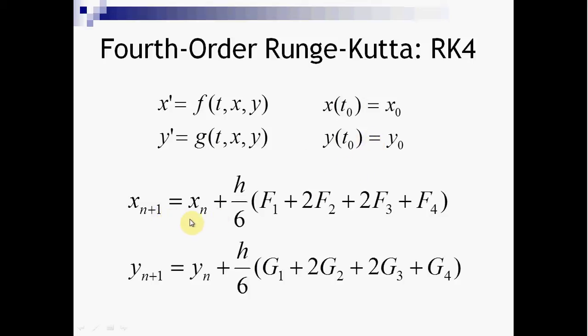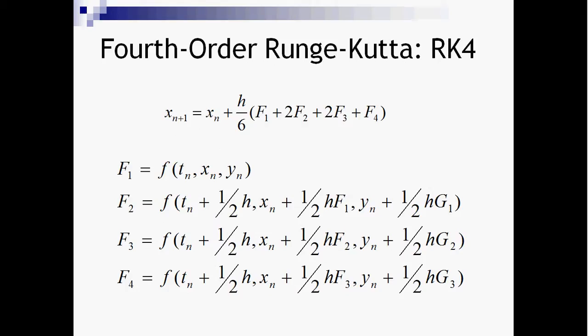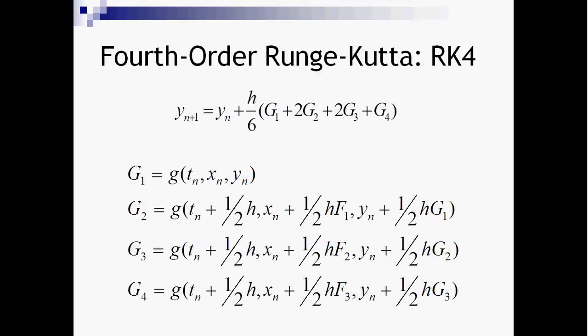The new x is the old x plus a weighted average of the four slopes, and yn is the old position plus the weighted average of the calculated four slopes — that's the general idea of the Runge-Kutta 4th order method. We get f1, f2, f3, f4 for the x position, and g1, g2, g3, g4 for the y position.